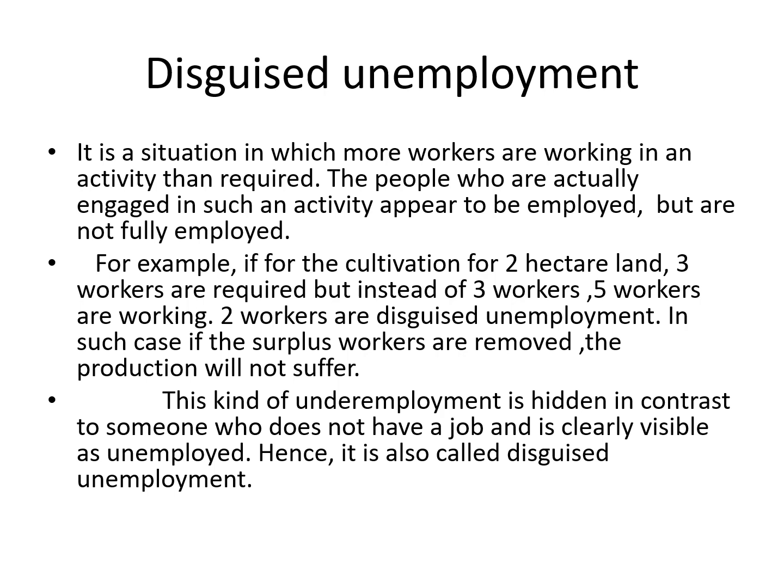After some time, a mill owner comes to the village. He offered a job to two members of the family. Now, two members are shifted from agriculture to factory work, but agricultural work is not affected. So, we can see disguised unemployment is a situation in which more workers are working in an activity than required.